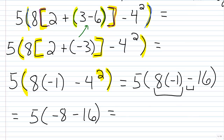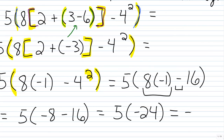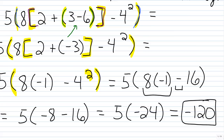Staying inside the parentheses, negative 8 minus 16 gives us negative 24. So we end up with 5 times negative 24. Five times 24: 5 times 20 is 100, 5 times 4 is 20, and 100 plus 20 is 120. Since the result is negative, our final answer is negative 120.